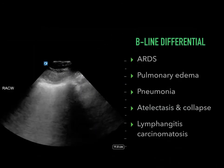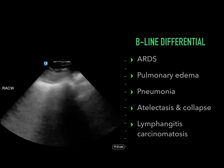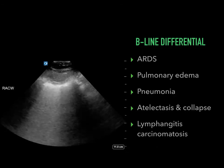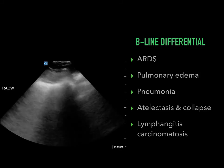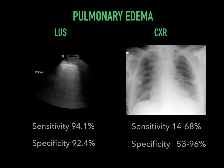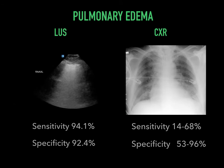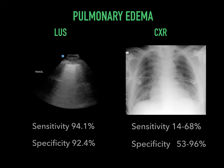B line differential includes acute respiratory distress syndrome, pneumonia especially when focal, atelectasis and collapse, and rarely lymphangitic carcinomatosis. The sensitivity of B lines for pulmonary edema is extremely high — around 94 to 92 percent respectively — in comparison to chest x-ray, which interestingly has sensitivity ranging from 14 to 68 percent.